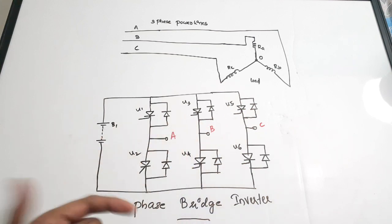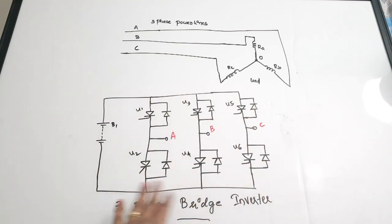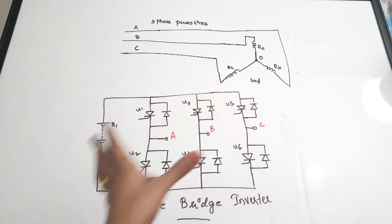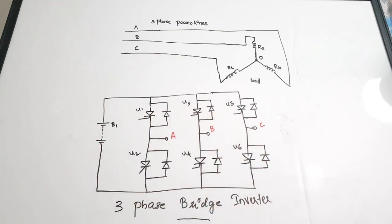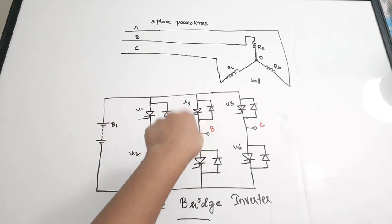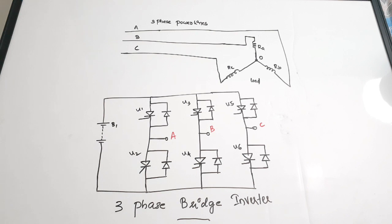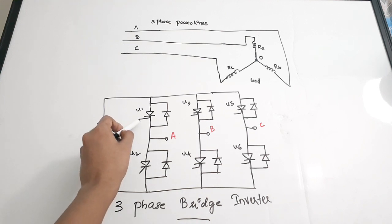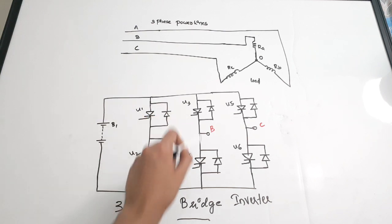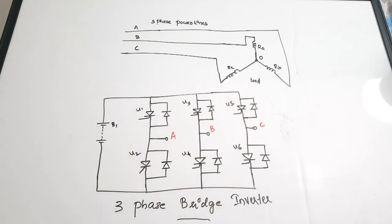This is the circuit diagram of a three-phase bridge inverter. You can see six thyristors along with six diodes connected as pairs, and each pair acts as a switch. There are two working modes: 120-degree conduction mode and 180-degree conduction mode. Each switch is complementary to the other switch in the same branch.